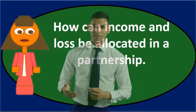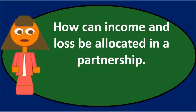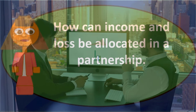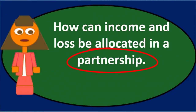In this discussion we will cover the question of how income and loss can be allocated in a partnership. When discussing the allocation of income and loss, it's easiest to start with the simplest method and then get more complex. The allocation of net income is one of the huge benefits that a partnership has, meaning there's a lot of flexibility, which is often underappreciated depending on the type of partnership.